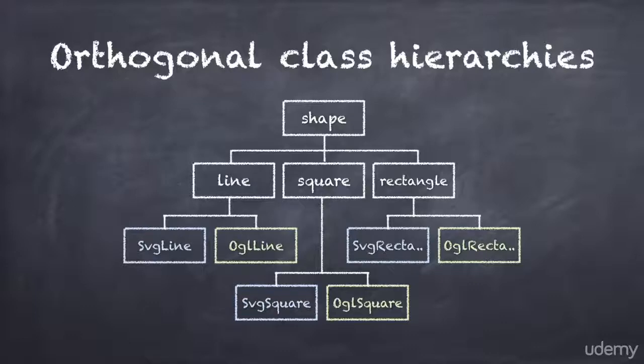You can see the problem here. Each implementation class appears in three places in the shape object graph. This leads to platform codes being spread out all over the object graph, instead of being neatly contained.